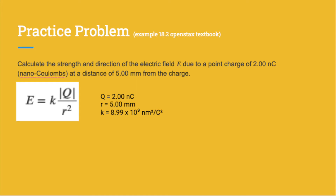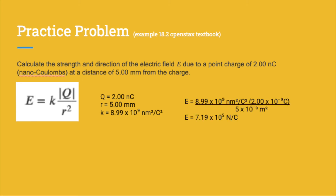Knowing that, Q equals 2 nanocoulombs, R equals 5 millimeters, and K equals our constant 8.99 times 10 to the 9th. We have to remember that we are measuring in Coulombs and meters when plugging into the electric field equation. So you want to convert nanocoulombs and millimeters into Coulombs and meters, and then plug it into the equation. Go ahead and hit pause and try it out for yourself. Here is the formula with all the numbers plugged in and the answer you should have gotten. If you got something else, go back and try it again or look up some other practice problems.